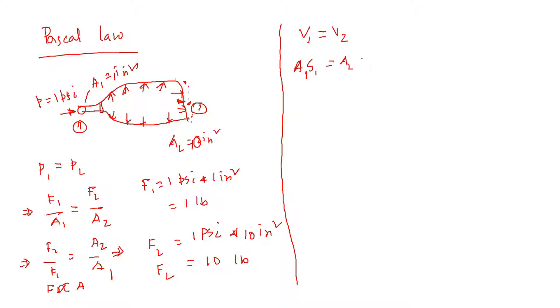So we can write this one basically A1 by A2 is equal to S2 by S1. If you replace this relationship right here, we can write that A1 by A2 is F1 by F2 is equal to S2 by S1.